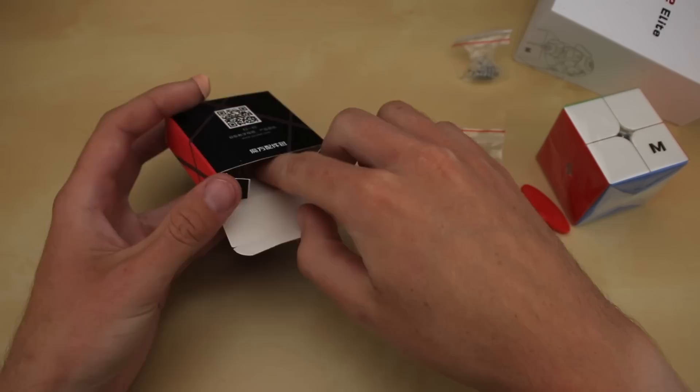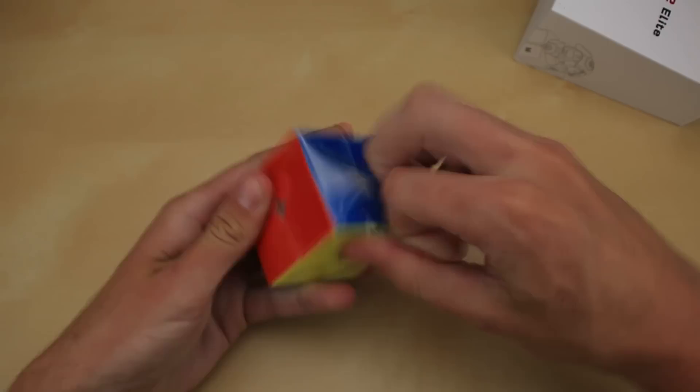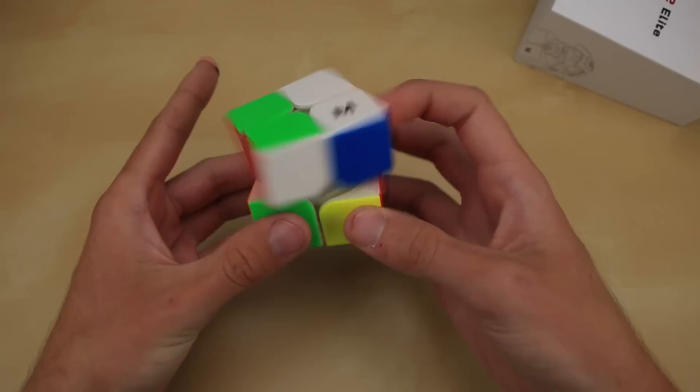We have a screwdriver, some extra magnets as well as a couple sets of extra springs and this little booklet here. So let's get that all out of the way and we can just grab the 2x2 right here. Now this cube comes in both stickerless and black plastic and has a nice removable logo sticker. Let's go ahead and do some first turns.